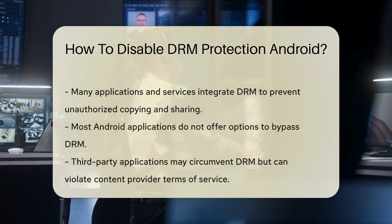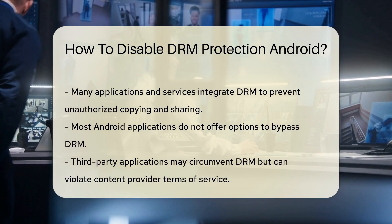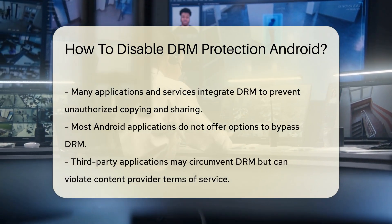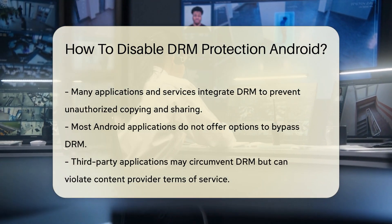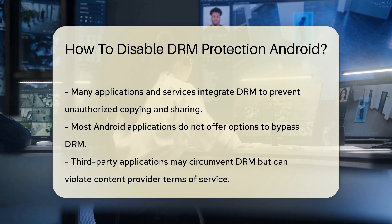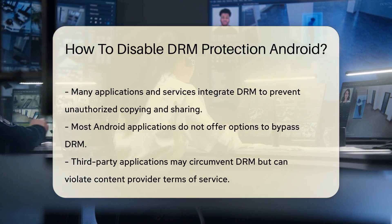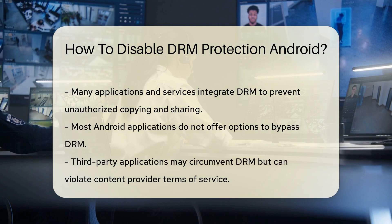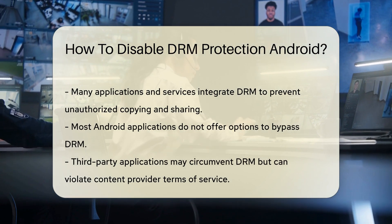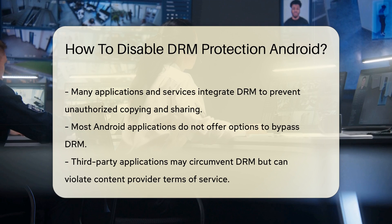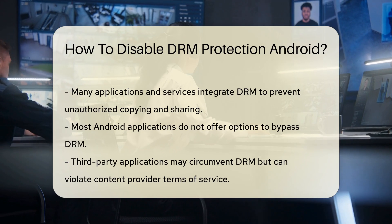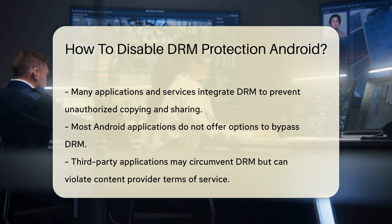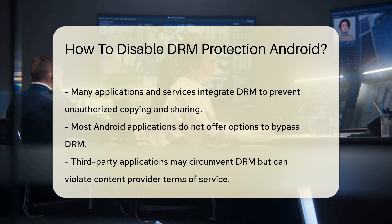Simply disabling it is not straightforward, and many Android applications do not provide an option to bypass DRM. One common method involves using third-party applications designed to circumvent DRM. However, employing such applications may violate the terms of service of the content provider, which can lead to loss of access to the content or legal repercussions.